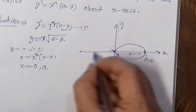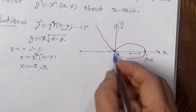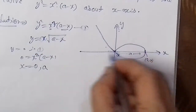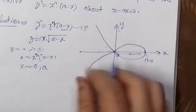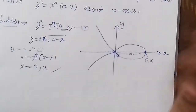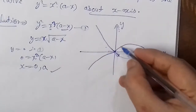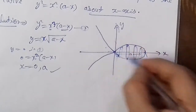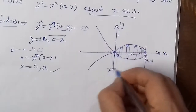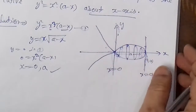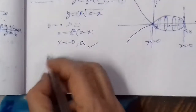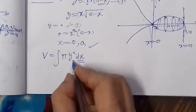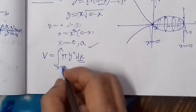Since Y is squared, the curve is symmetric about the x-axis, and the loop will form symmetrically. So x = 0 and x = A are the limits. The required volume V is equal to π∫y² dx, with x-axis limits from 0 to A.